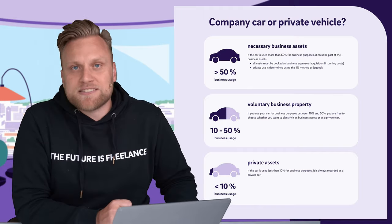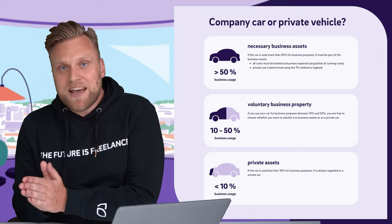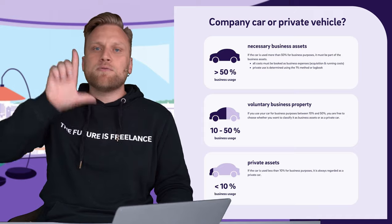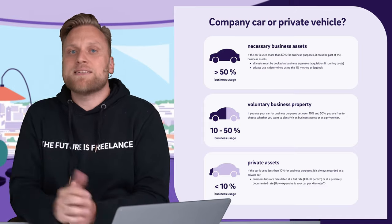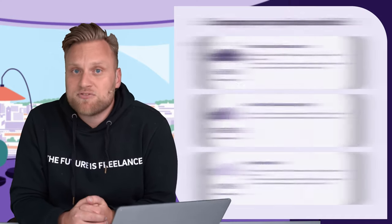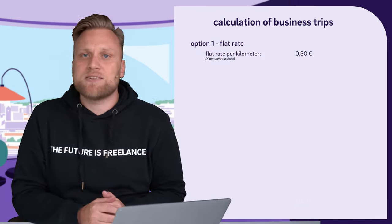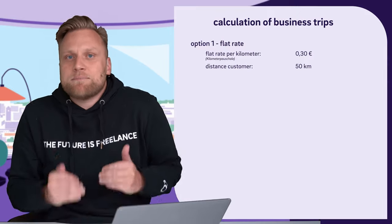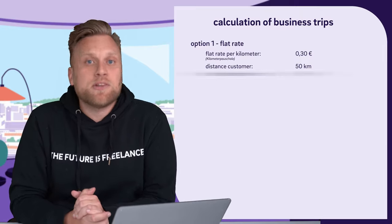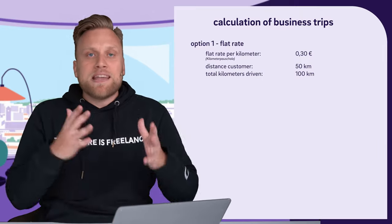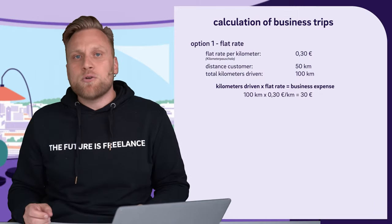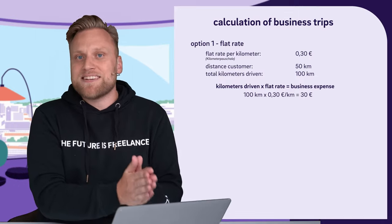If you include your car in the business assets, or if you buy the car privately but use it for business trips, you still have two options. The first option is a flat rate method — you can book 30 cents per kilometer driven as a business expense. For example, if you drive to a client meeting 50 kilometers away, you drive 50 km there and 50 km back — 100 kilometers total. You simply calculate 100 kilometers times 30 cents, which equals €30, and you can book that as a business expense.